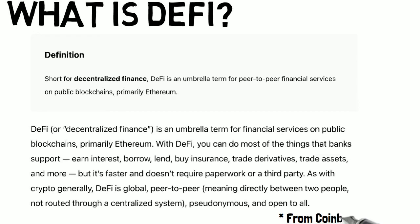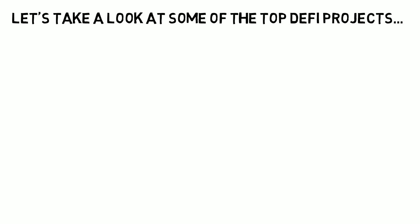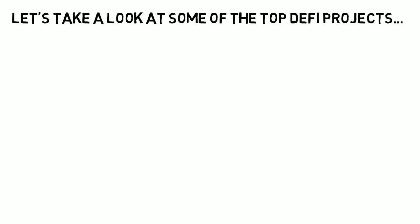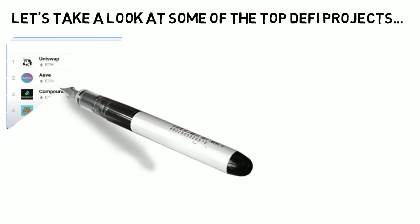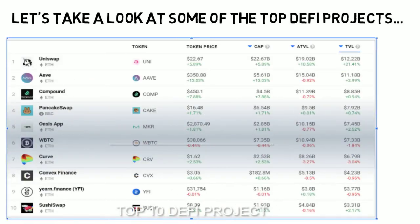One of the things we're going to do is take a look at some of the top projects that are out there, by Total Value Locked, or TVL. Uniswap is one of the top for liquidity providing. We have Aave, which is a really big project for lending. We have Compound Finance and PancakeSwap, which is on the Binance Smart Chain. We have Oasis App, as well as Wrapped BTC, which actually allows you to use Bitcoin on the Ethereum network. We have Curve Finance and Convex Finance, which work closely together, and Yearn Finance and SushiSwap. Curve and Convex are probably very close in Total Value Locked for that reason.